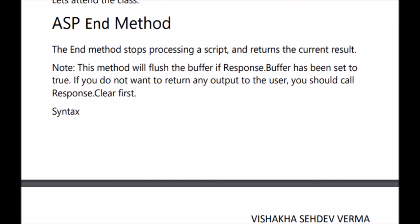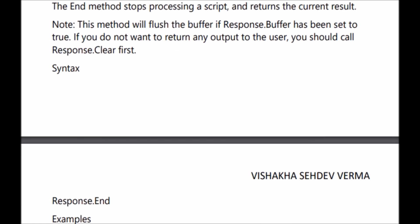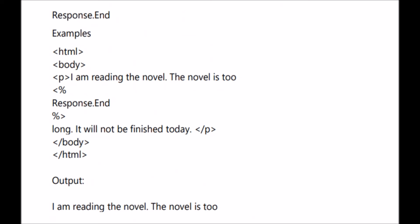The ASP end method is used to stop the processing of a script and return the current result. This method will flush the buffer if response.buffer has been set to true. If you do not want to return any output to the user, you have to call response.clear first to clear the output. The syntax is response.end.